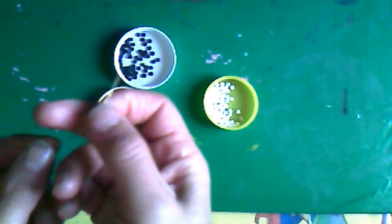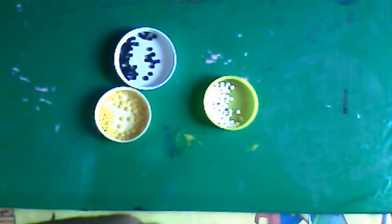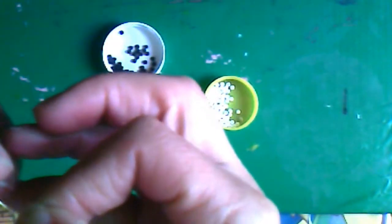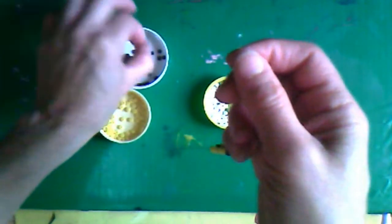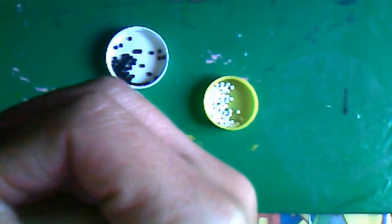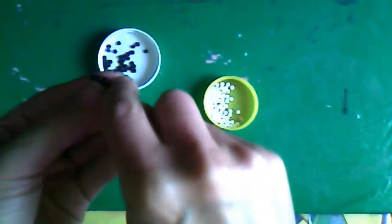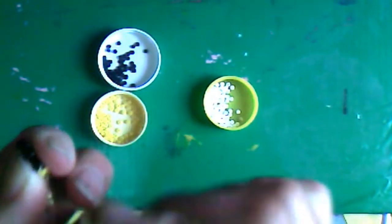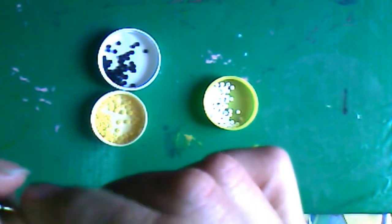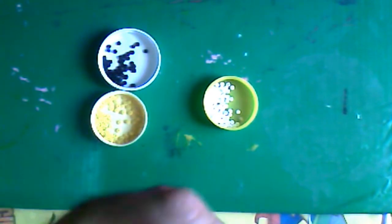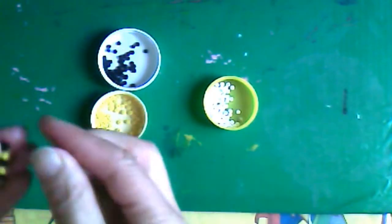Ahora vamos a proceder a hacer lo mismo con cuatro Shakirón negros. Uno, dos, tres y cuatro. Lo acomodo arriba de mis Shakirón amarillos e inserto mi alambre del otro extremo por mis Shakirón negros quedando de esta manera. Ya quedó aquí. Ahora vamos a hacer el siguiente paso.